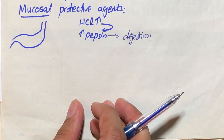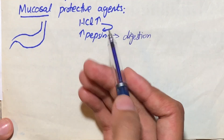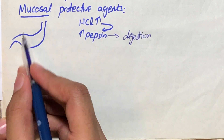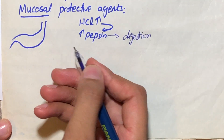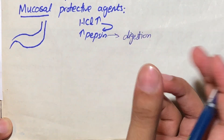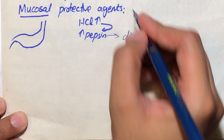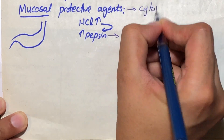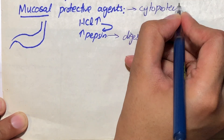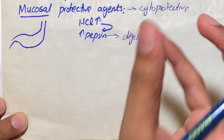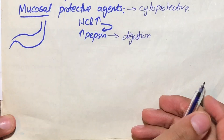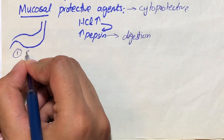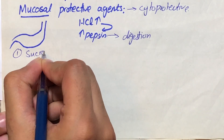These agents are called mucosal protective agents because they protect the mucosal lining of the stomach. They are also called cytoprotective agents because they protect the cells of the innermost layer of the stomach, which is the mucosa. In this class we have the drug sucralfate.